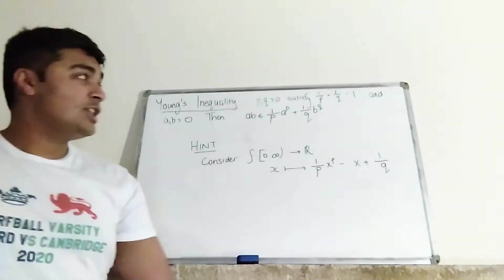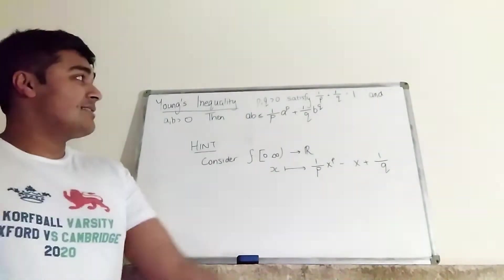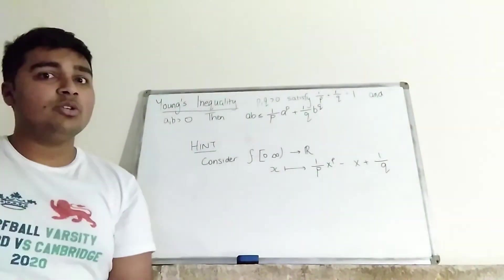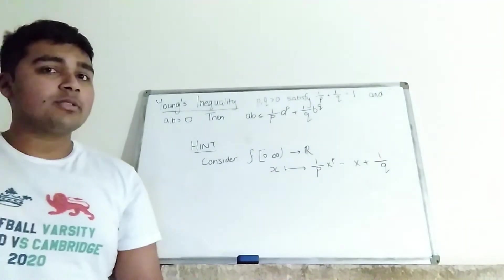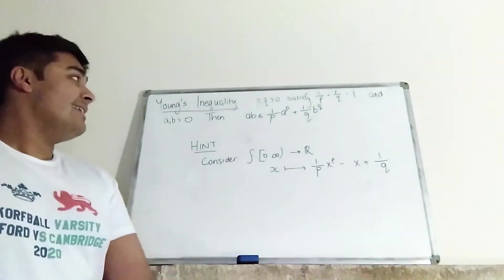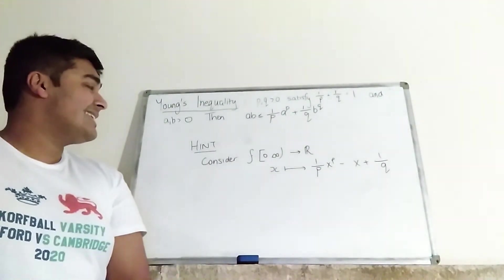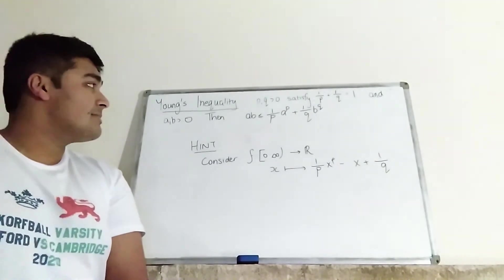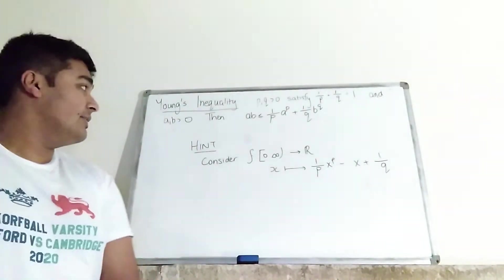Okay, so suppose P and Q are positive numbers which satisfy 1 over P plus 1 over Q equals 1. And we also have A and B positive numbers as well. Then A times B is less than or equal to 1 over P times A to the P plus 1 over Q times B to the Q.